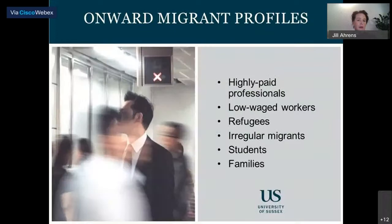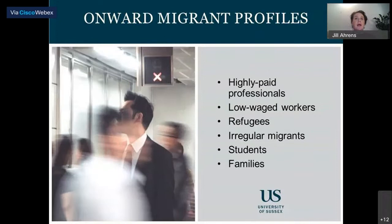It is difficult to quantify onward migration because current immigration statistics and population register data provide an incomplete picture. Large-scale surveys like the Migrations Between Africa and Europe (MAFE) longitudinal survey, or the NCCR Migration Mobility Survey, provide more detailed insights about the prevalence and patterns of onward migration amongst specific migrant groups or in particular destination countries like Switzerland. There is also a growing number of qualitative studies suggesting that onward migration is a common trajectory across a wide range of migrant categories.